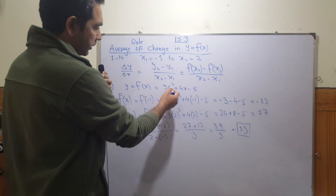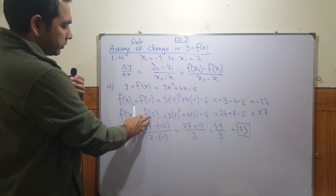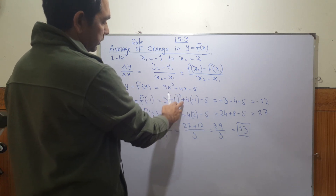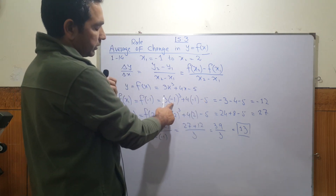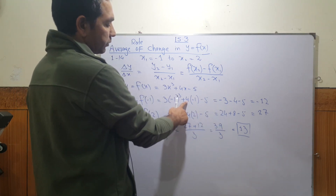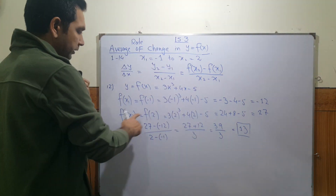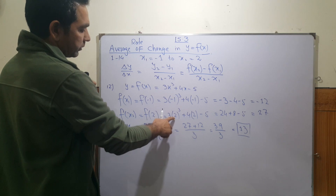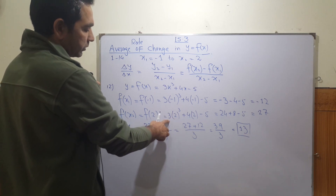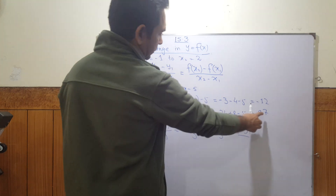In question 12, the function is 3x³ + 4x - 5. We find f(x₁) = f(-1): 3(-1)³ + 4(-1) - 5 = -3 - 4 - 5 = -12. Then f(x₂) = f(2): 3(2³) + 4(2) - 5 = 3(8) + 8 - 5 = 24 + 8 - 5 = 27.